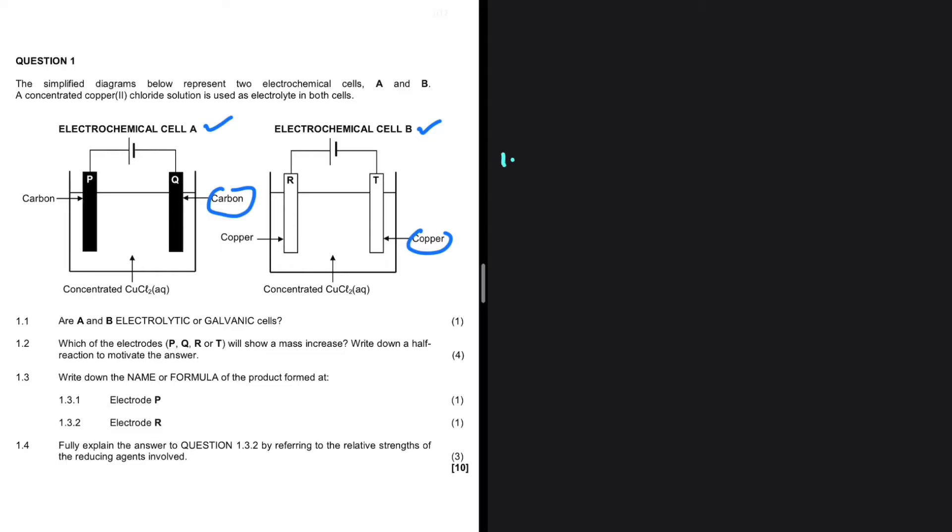The first question, 1.1, are A and B electrolytic or galvanic cells? It will be easy to see that A and B are electrolytic cells. Why do we say so? The presence of a power source and the mere fact that both electrodes are in one container. In a galvanic cell, the electrodes are in different containers and there is no power source.